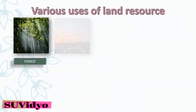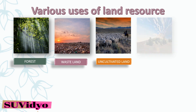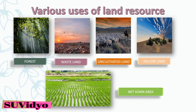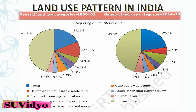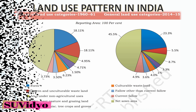In India, we put the land into various uses. They can be forests, wasteland, uncultivated land, fallow land and net sown area. The land use pattern in India is shown in a pie chart. You are requested to pause the video and note what type of land and what percentage of land is present in India.